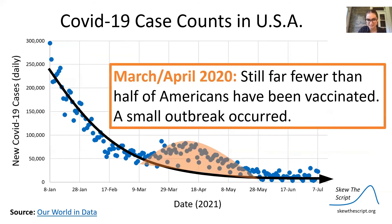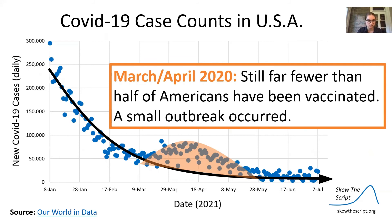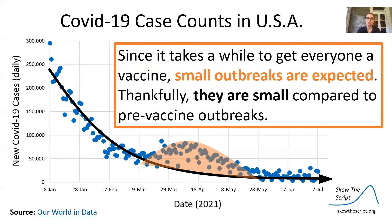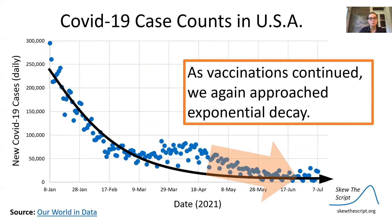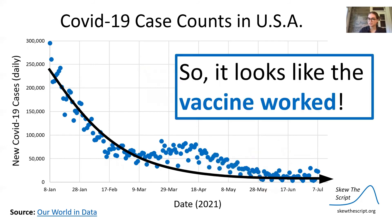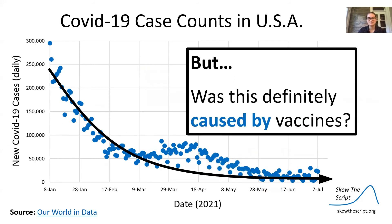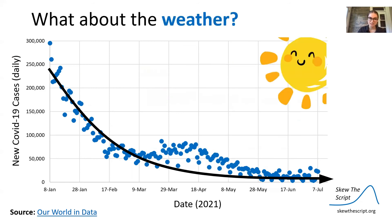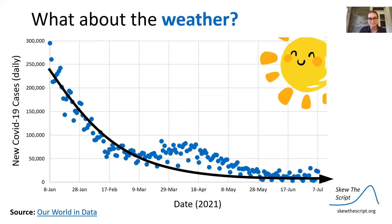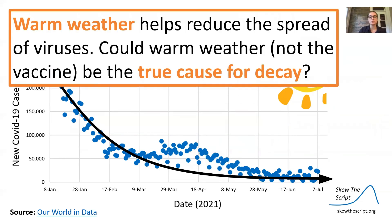What about this bump in cases? In March/April, still far fewer than half a million Americans had been vaccinated, so a small outbreak is expected. Since it takes a while to get everyone vaccinated, small outbreaks are expected, and thankfully they're small compared to pre-vaccine outbreaks. As vaccinations continued, we again approached exponential decay. But was the decline definitely caused by vaccines? Couldn't warm weather — January to July going from winter to summer — have been the true cause for the decay?